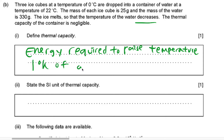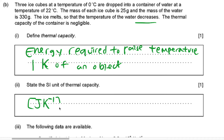You can also say 1 degree Celsius — both are fine. State the SI unit of thermal capacity. The unit is joules per Kelvin, or you can say joules per degree Celsius. Both are acceptable.